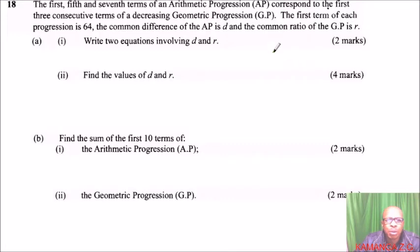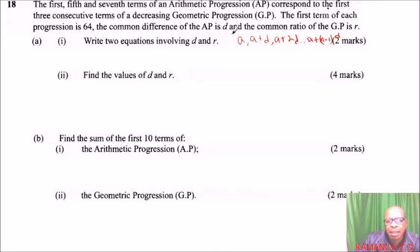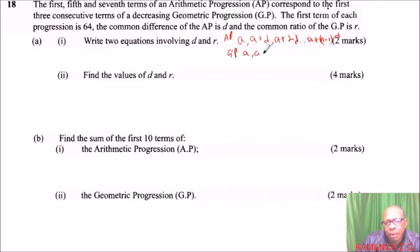To solve this, remind yourself what arithmetic and geometric progressions are. For an arithmetic progression, the sequence is: a, a+d, a+2d, and so on, up to a+(n-1)d. For a geometric progression, when you divide two consecutive terms you get a common ratio r. The GP sequence is: a, ar, ar², and so on, up to ar^(n-1).